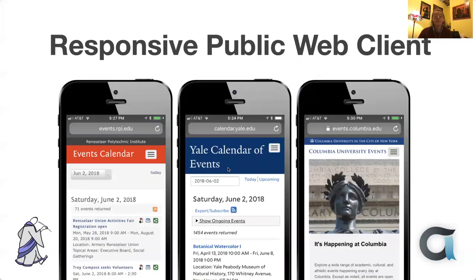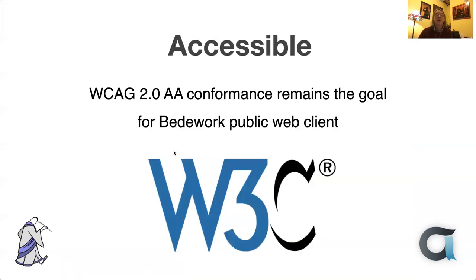For public events calendaring, we've got a fully responsive public web client. It has a rather nice view on the phone. There are a number of different views you can find by going to places like Yale, Duke, or Maryland. It's fully customizable to provide different looks. It may actually be fully conformant now — Alan did some work recently on accessibility features that may not quite have made it back into the source, but it's pretty much fully accessible.